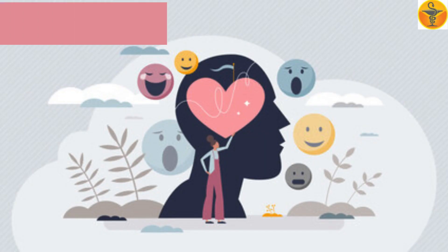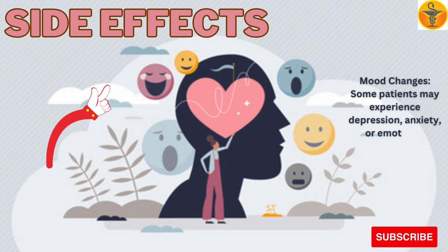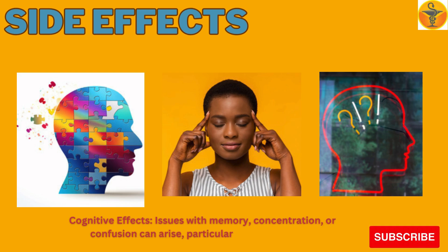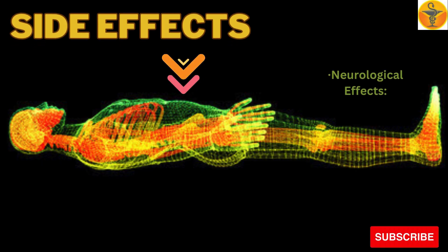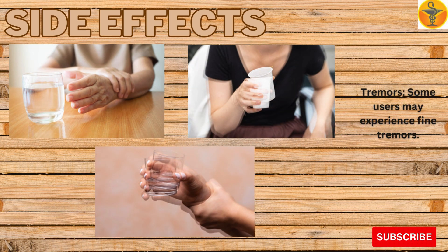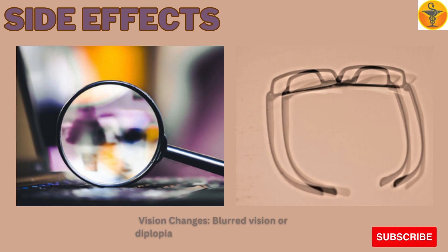Psychiatric Effects: Mood changes — some patients may experience depression, anxiety, or emotional instability. Cognitive effects such as issues with memory, concentration, or confusion can arise, particularly in older adults. Neurological Effects: Tremors — some users may experience fine tremors. Vision changes, including blurred vision or diplopia (double vision), can also occur.